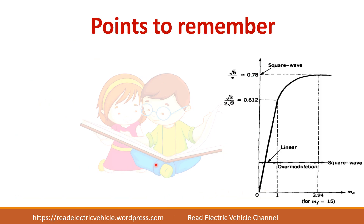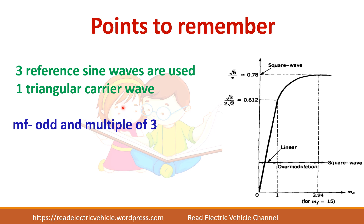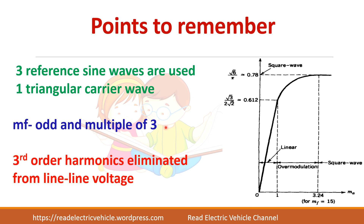Key points to remember: three reference sine waves are used with one triangular carrier wave. MF should be an odd integer and a multiple of 3 so that third order harmonics are eliminated. There are three operating regions: the linear region (MA ≤ 1), the over modulation region (MA > 1), and the square wave region.